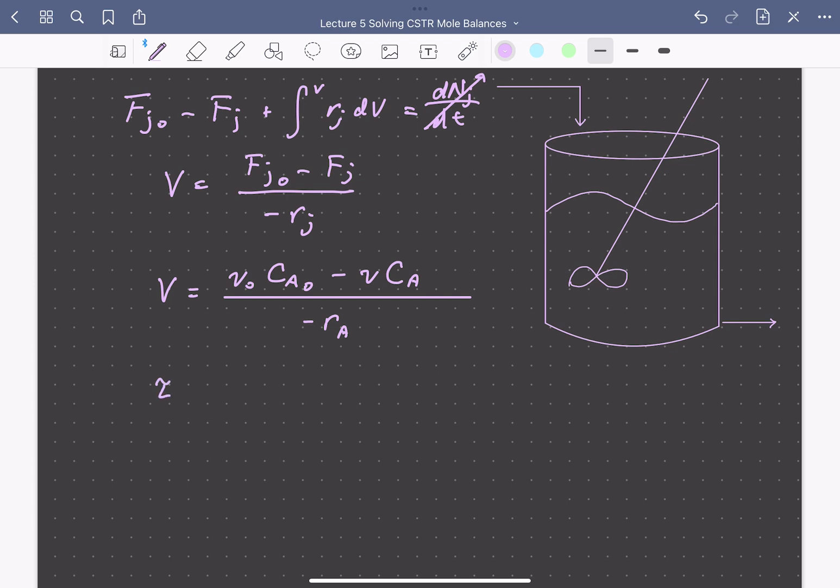We introduced the term, the residence time, which we can define as the reactor volume divided by the volumetric flow rate. In this case, we're going to assume constant density, so the inlet and outlet volumetric flow rates are equal.